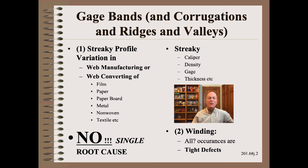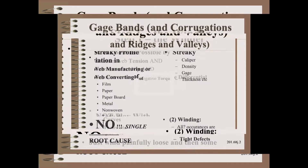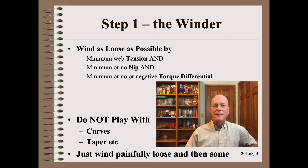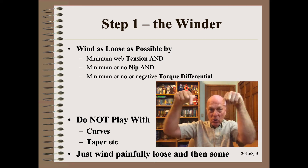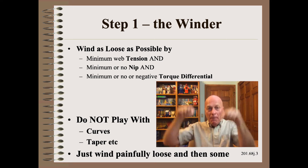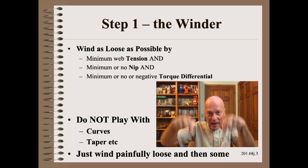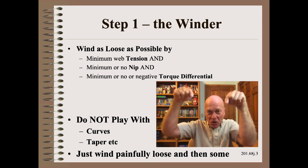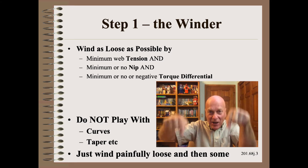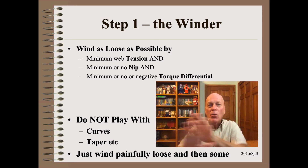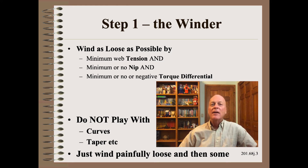However, in problem solving, we will start with the winder because it is the simplest. Step one is super simple: wind as loose as possible. Painfully loose, and then some. Turn all the knobs as far down as they will go, and then some. Do not play with the curves or taper — they will just waste time and limit progress.